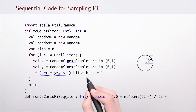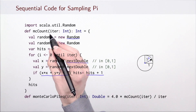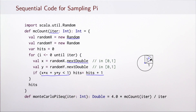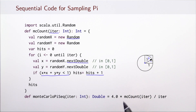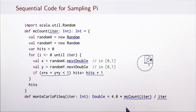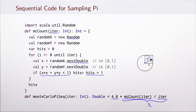we check whether their distance to the origin is less than 1. If this is the case, we increase the counter. So given some total number of attempts, denoted here by ITER, we compute how many times we ended up inside the circle. Given this ratio — the number of times inside the circle divided by the total number of attempts — we get our estimate for lambda from the previous slide. Then if we multiply it by 4, we get our estimate for pi.